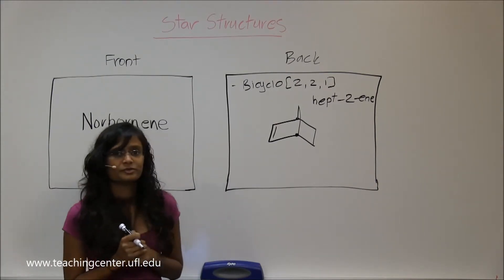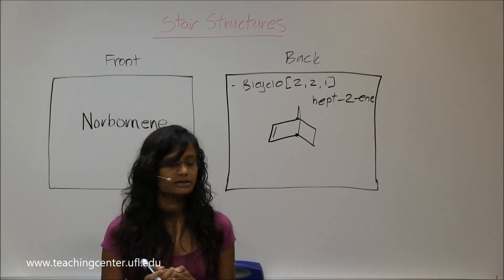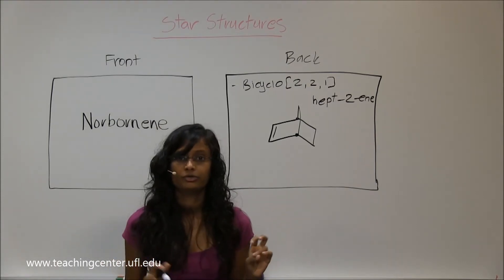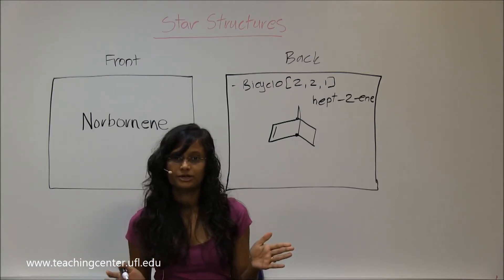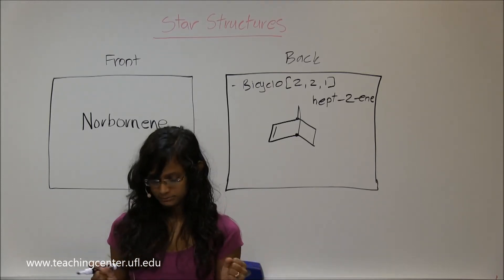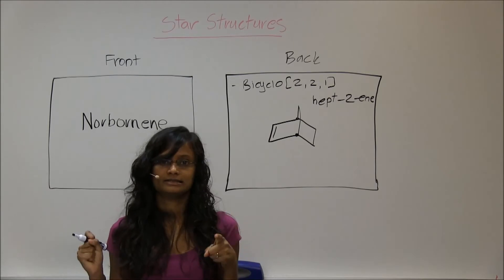There are very few bicyclic structures where he wants you to know the IUPACs. This is one of them, norbornene, which is the next one, that's one of them. And the one that we did earlier, what was that? Decalin is the other one.